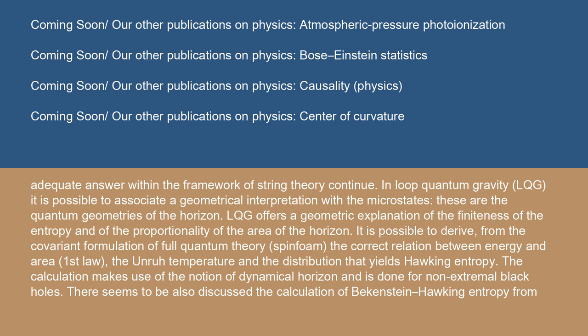It is possible to derive from the covariant formulation of full quantum theory, spin foam, the correct relation between energy and area (first law), the Unruh temperature, and the distribution that yields Hawking entropy. The calculation makes use of the notion of dynamical horizon and is done for non-extremal black holes.